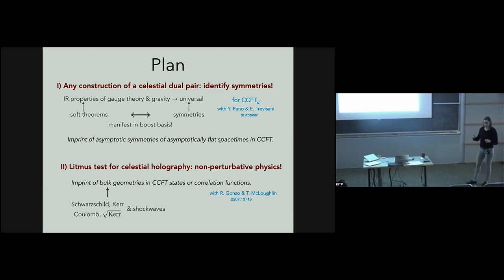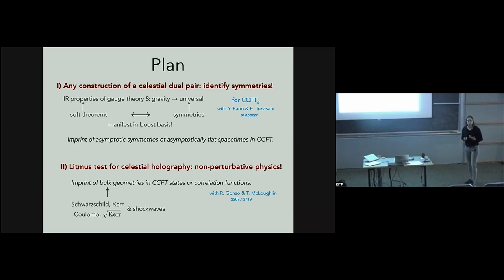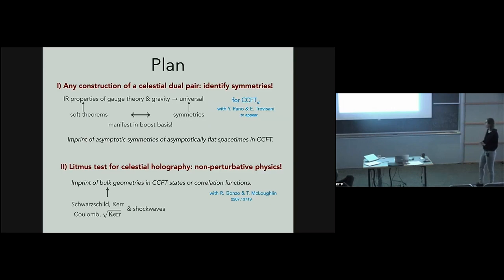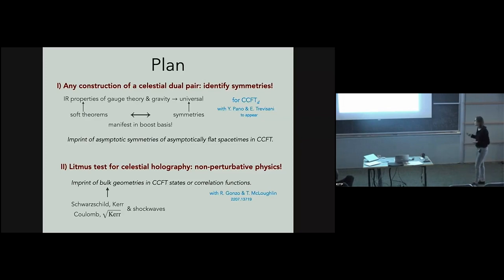The second question is: once we understand the symmetries, what can we do with them? A litmus test for celestial holography would be accounting for non-perturbative physics such as black hole formation and evaporation. As a step in that direction, I will ask what the imprints of bulk geometries are on states in the celestial CFT and how they appear in correlation functions. This work was done with my student Yorva Bano and postdoc Emilio Trevisani, and separately with Ricardo Gonzo and Tristan McLaughlin.